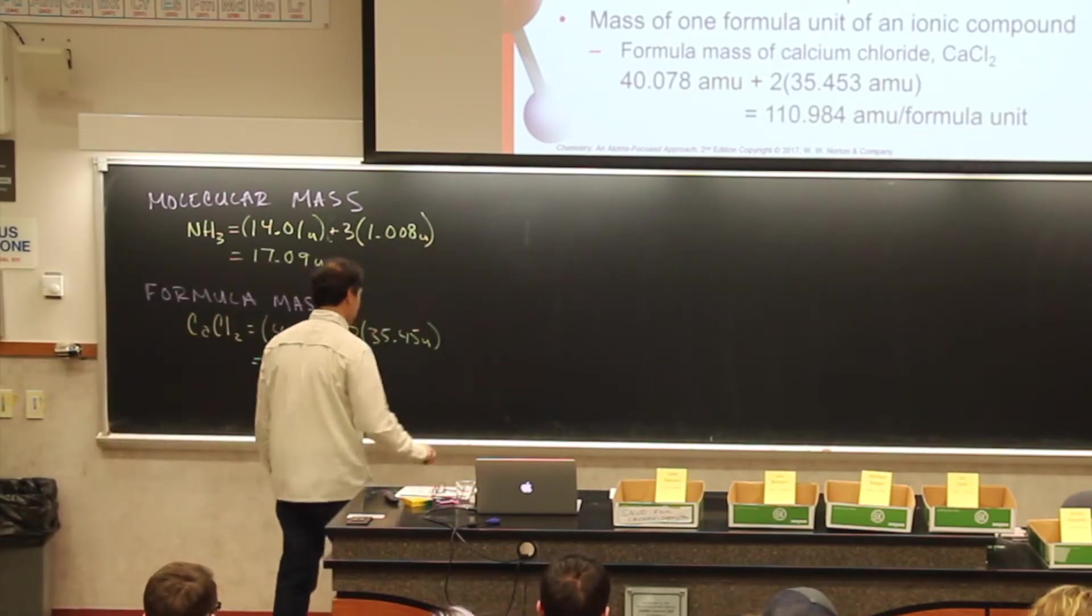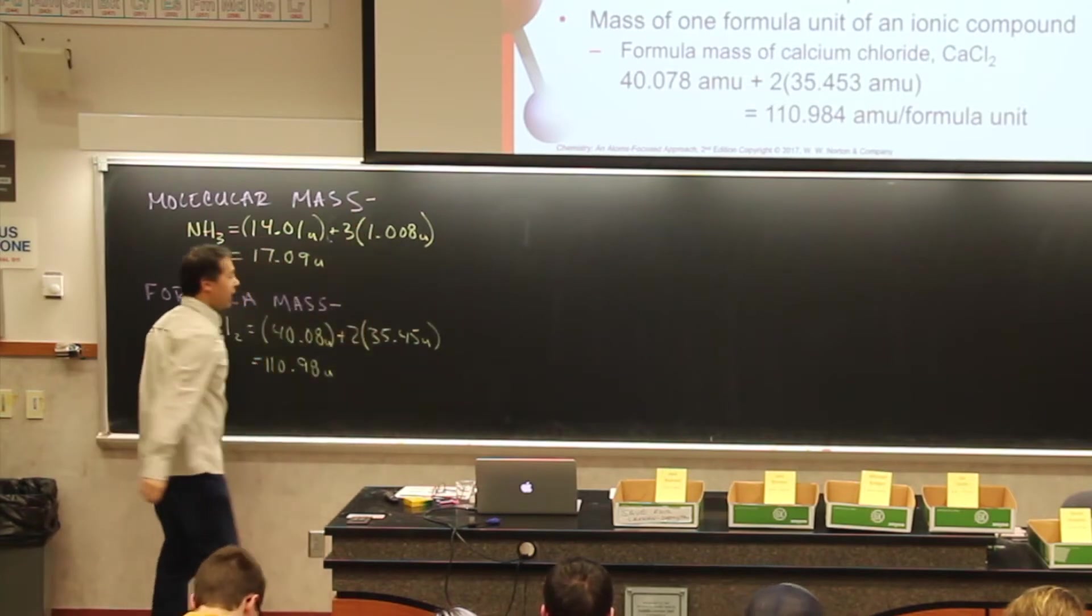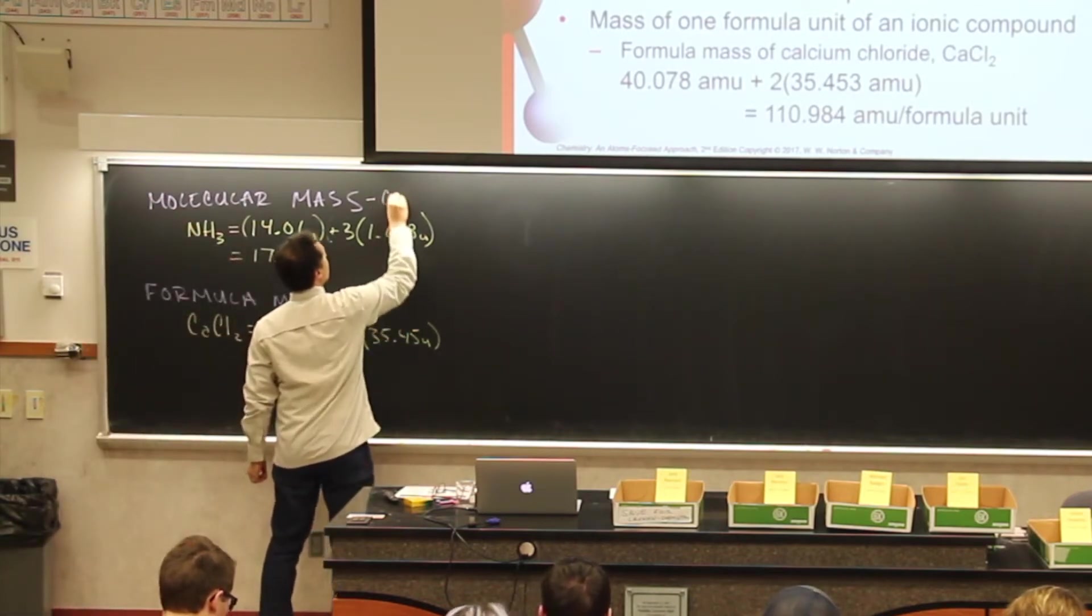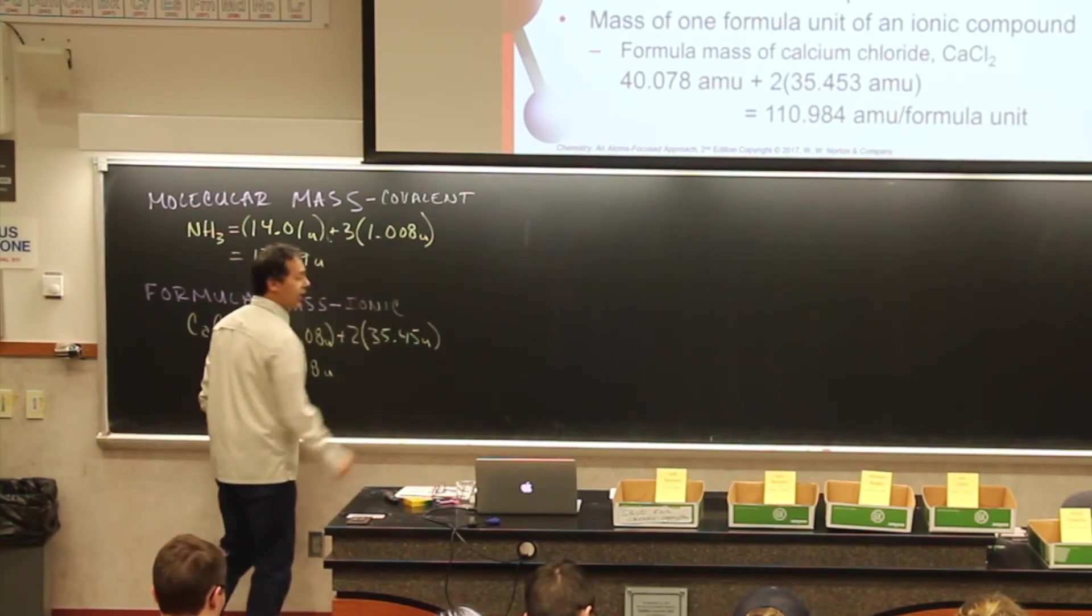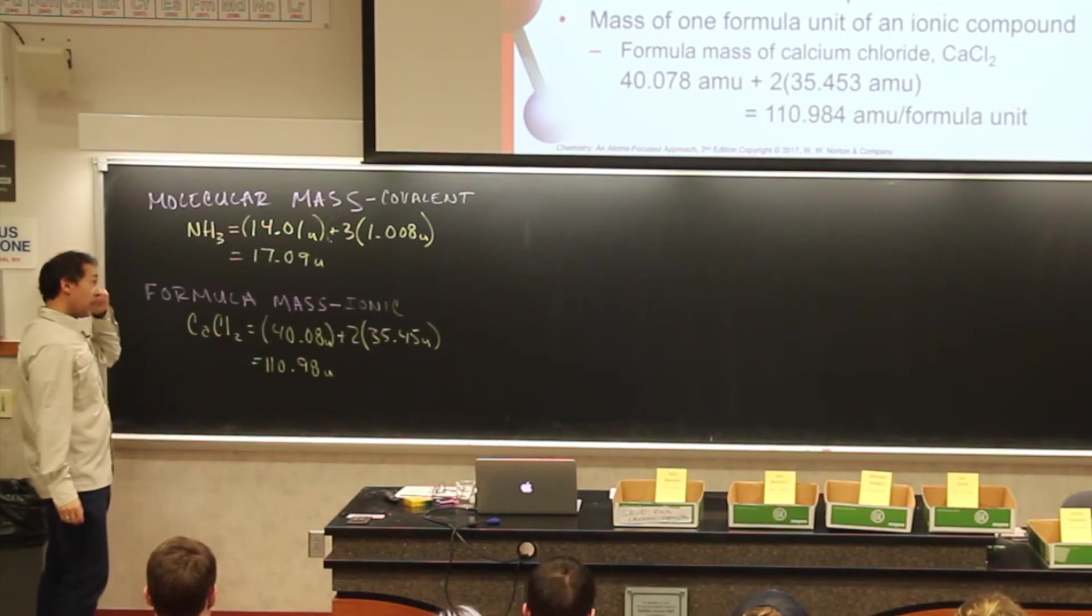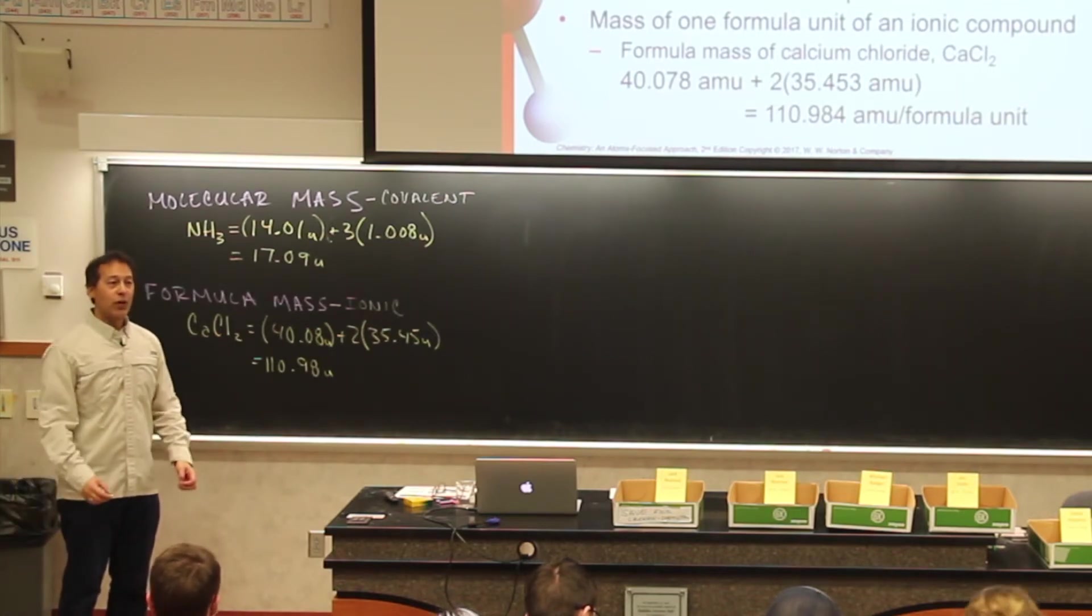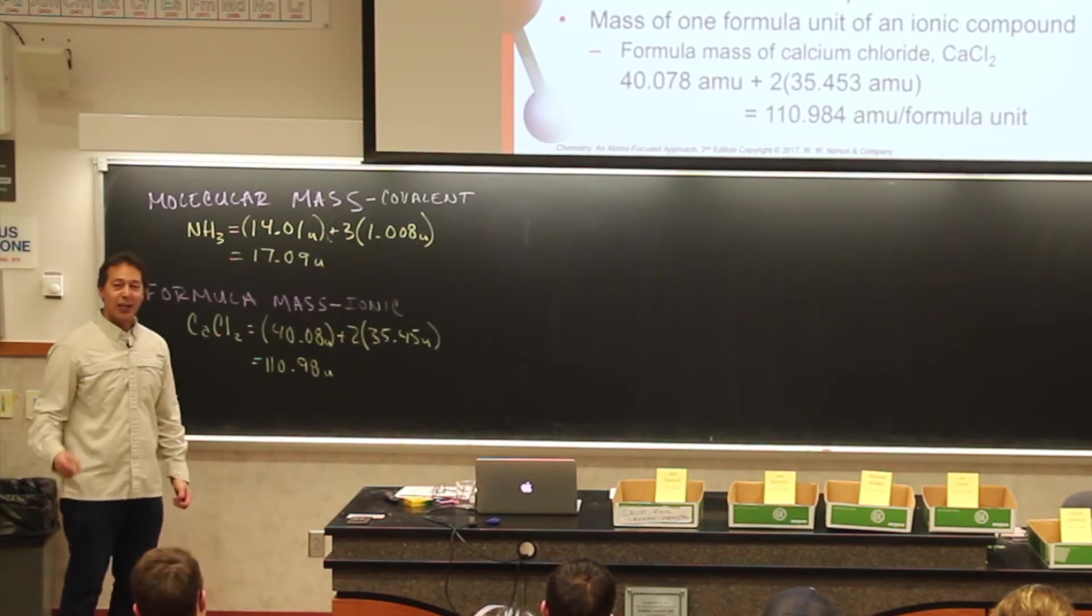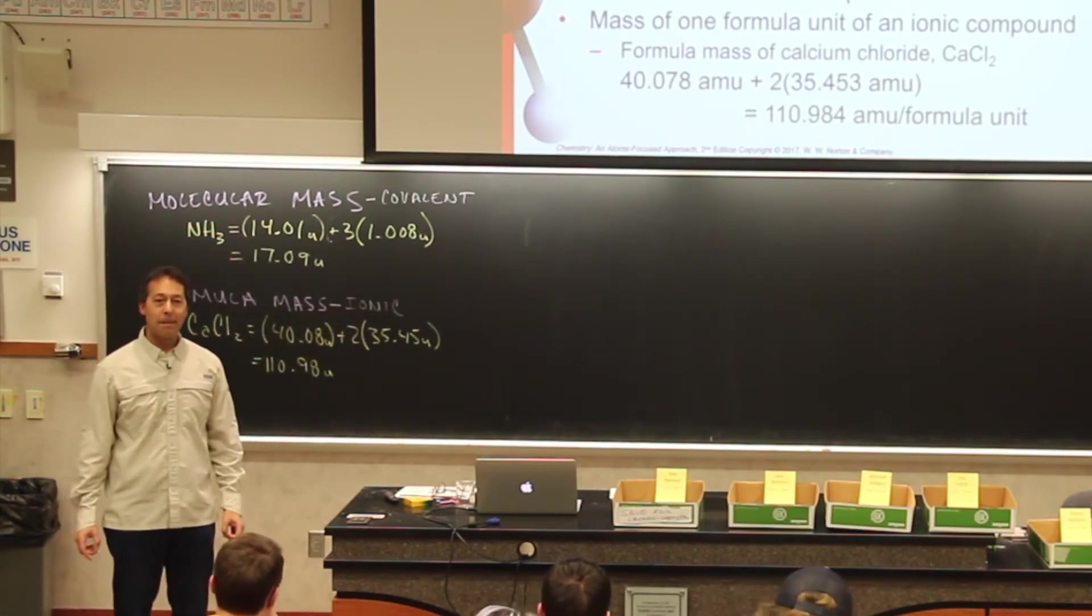This goes back to the olden days when they had just discovered the wheel and Professor Locken was graduating from high school. They had different ways of doing things. So molecular mass, this is when we have covalent compounds. And this is where we have ionic compounds. How do I know if something is covalent or if it's ionic?